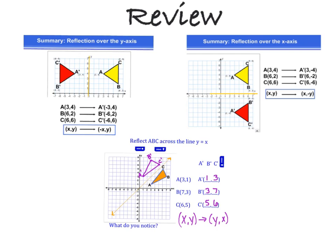In class we've already looked at what happens if we reflect over the y axis. If you look over here you see that triangle ABC reflected over the y axis and our rule down here tells us that all of our x coordinates became the opposite and the y coordinates stayed the same when we reflected over the y axis.